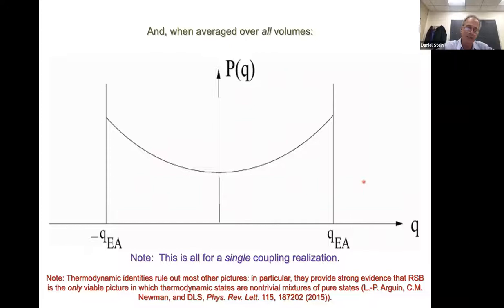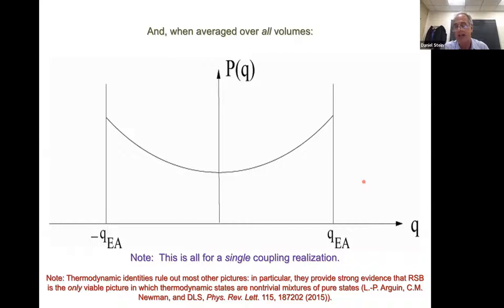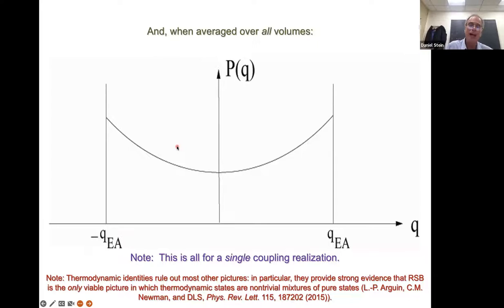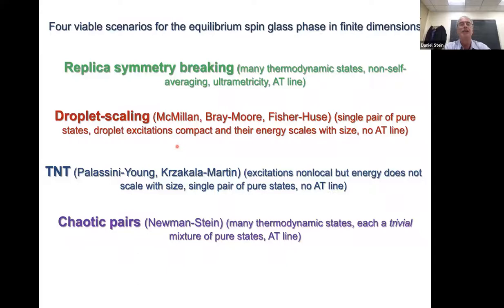Basically all of the features of replica symmetry breaking, like ultrametricity and all that, do not apply to all of the pure states as originally thought, but only to the pure states within a single mixed Gibbs state. The different mixed Gibbs states all have different overlap distributions, and when you average over all of them — even for a single coupling realization — you get the Parisi order parameter. So now let me turn in the last 10 minutes to the viable scenarios for the equilibrium spin glass phase in finite dimensions.